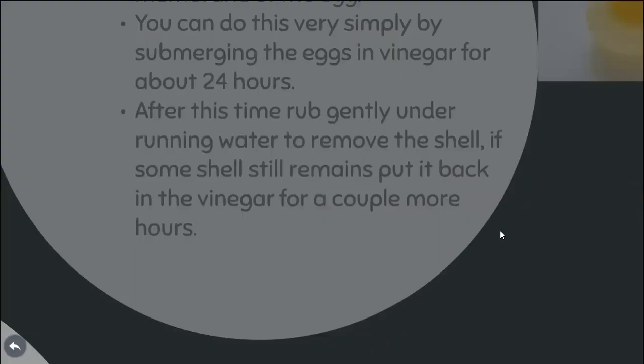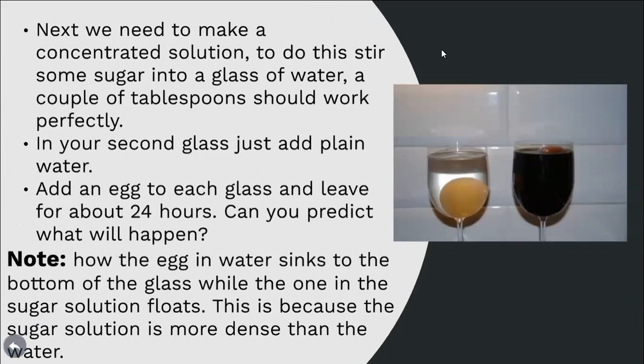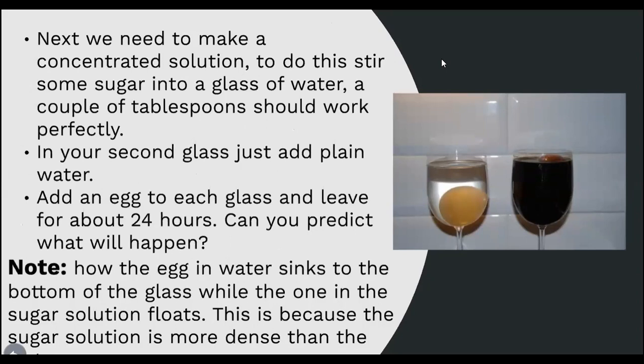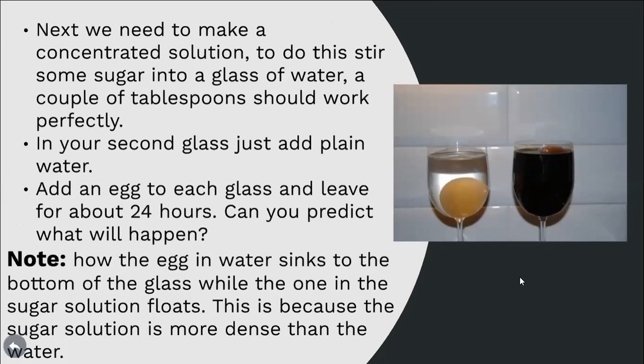Next, make a concentrated solution by stirring a couple of tablespoons of sugar into a glass of water. In the second glass, just add plain water. Then add one egg to each glass and leave it for about 24 hours.